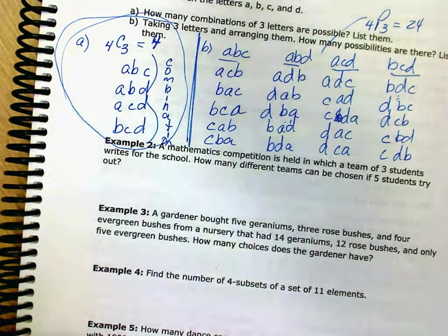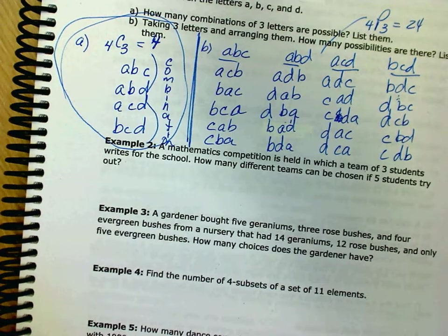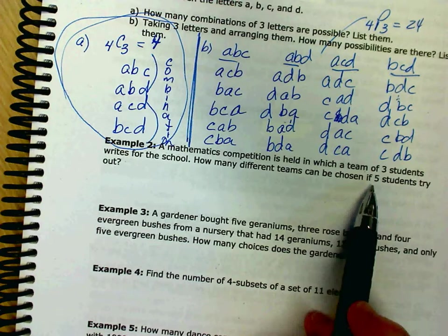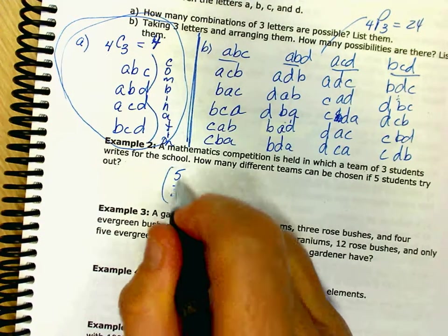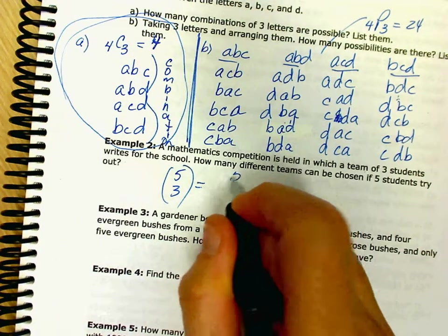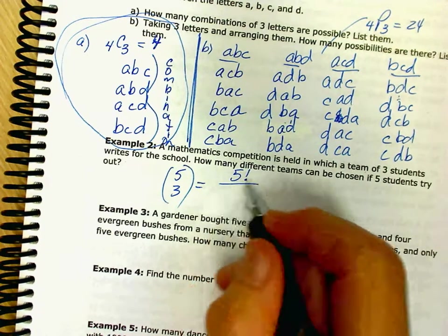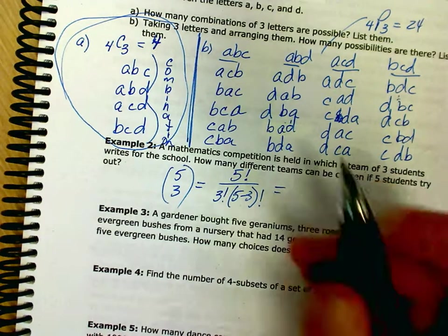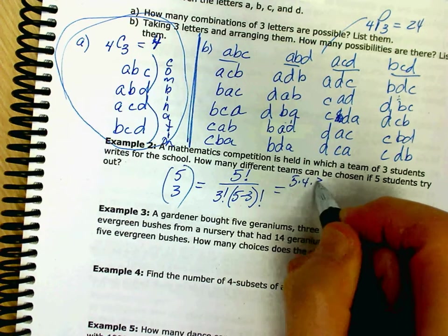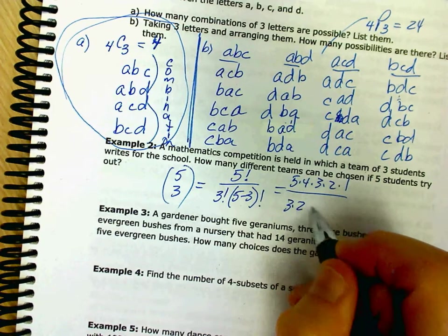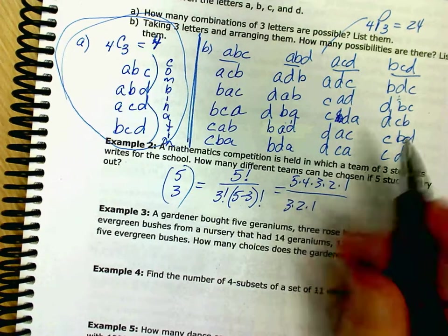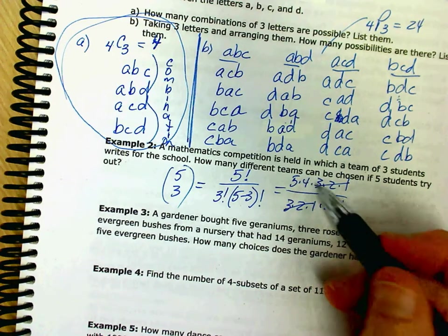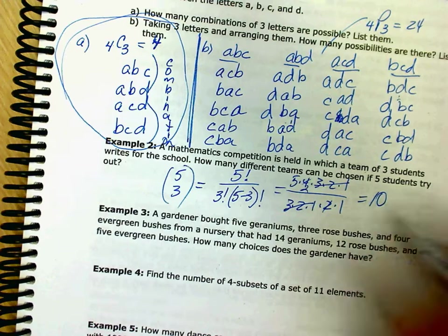A mathematics competition is held in which a team of three students writes for the school. How many different teams can be chosen if five students try out? So out of the five students, we're choosing three. If we want to plug it into the formula, you go five factorial over three factorial and five minus three factorial. No order is important here. So you've got five times four times three times two times one over three times two times one and two times one. So we can divide that out. Four divided by two is two. And that's ten. If you plug it in, you can plug it in your calculator too.